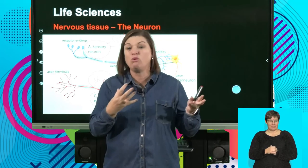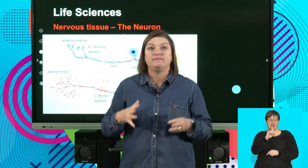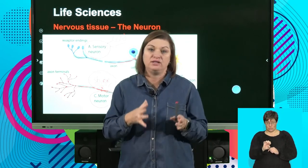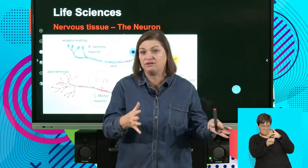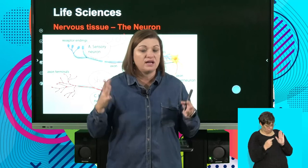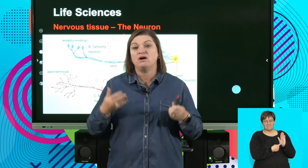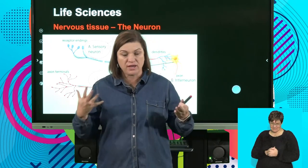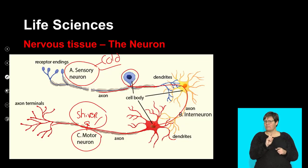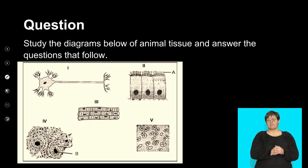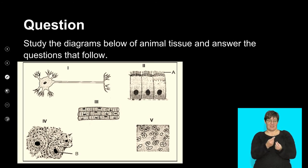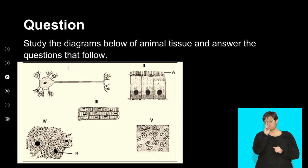We have now looked at all the different kinds of mammalian tissues. The most difficult part is actually trying to recognize, when given a diagram, what tissue you're looking at. If you can't recognize the tissue you're going to have a problem answering the questions that follow. Let's look at what kinds of questions can be asked on this section.